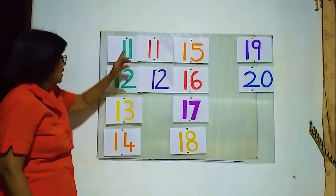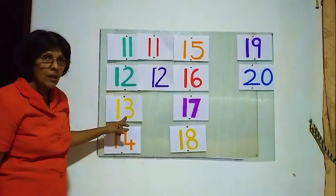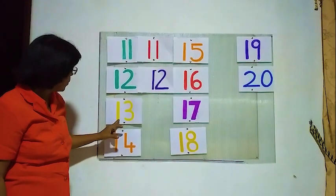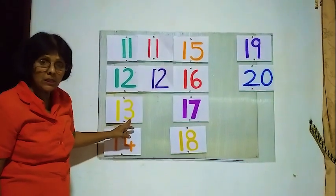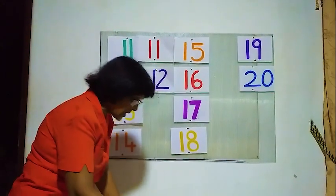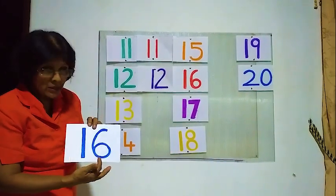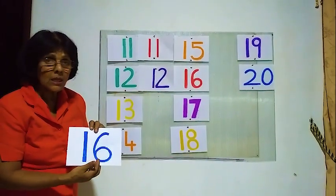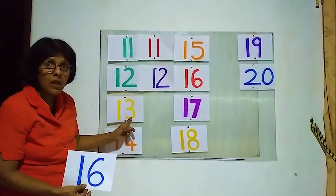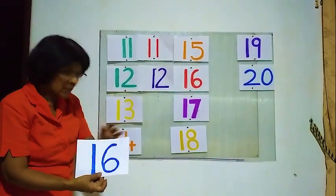Number 11 correct, number 12 correct. Now what's the next number? Number 13 — 1 and 3. We will see this one. Is this number 13? 1 and 6, 1 and 6 — this is not number 13. This is 1 and 3, 1 and 3, this is 1 and 6 — this is not correct.